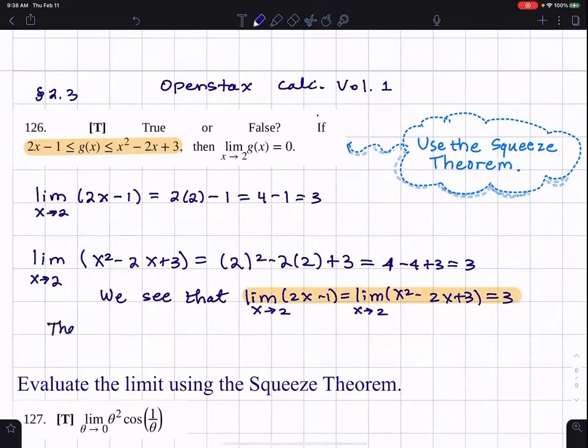So therefore, the limit of G of X as X approaches 2 is equal to 3 by the squeeze theorem, aka the sandwich theorem.